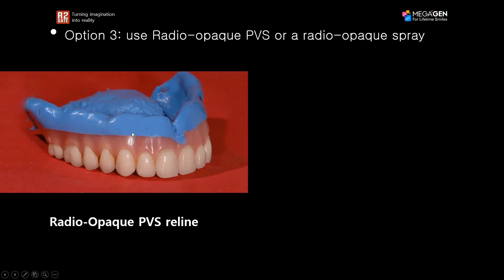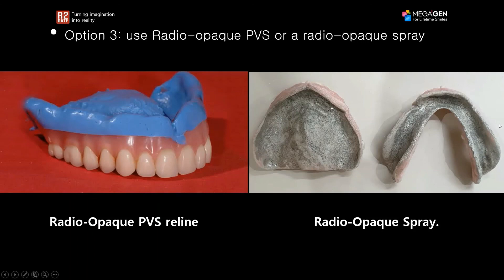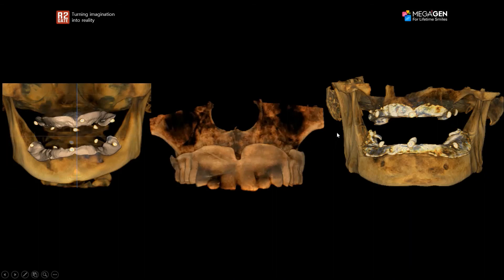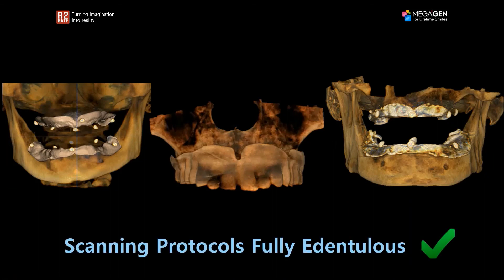Option number three uses a radiopaque polyvinyl siloxane or a radiopaque spray. We can reline the patient's existing denture with radiopaque PVS, or simply spray a radiopaque spray inside the denture to identify the fitting surface. In this case, a combination of both was used — a small white line visible in the CBCT identifies where the model outline is. This is how we use radiopaque reline material, a radiopaque spray, or a combination of both. That covers all scanning protocols for fully edentulous patients.